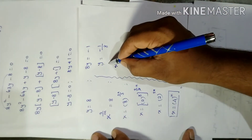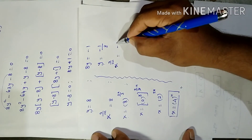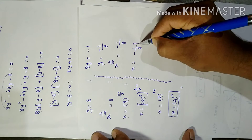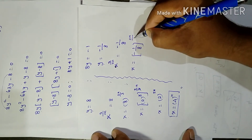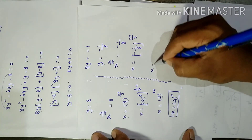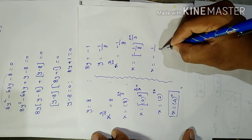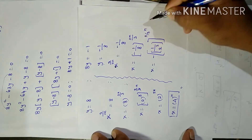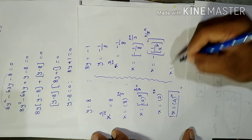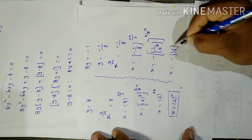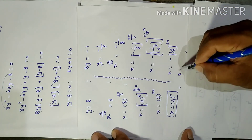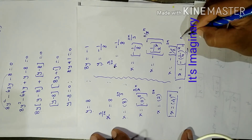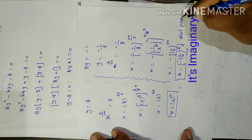For the second value, y equal to minus 1 by 8: x power 3 by 2n equal to minus 1 by 8. So x equal to minus 1 by 2 power 3, whole power 2n by 3. The 3 cancels, giving x equal to minus 1 by 2 whole power 2n, which is minus 1 by 4 whole power n. This is an imaginary value, hence this root is not possible.